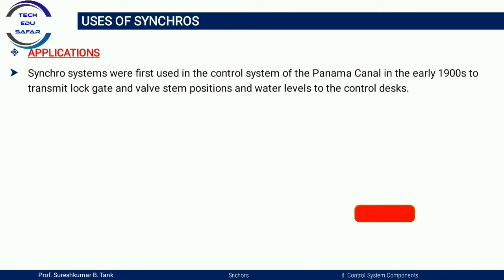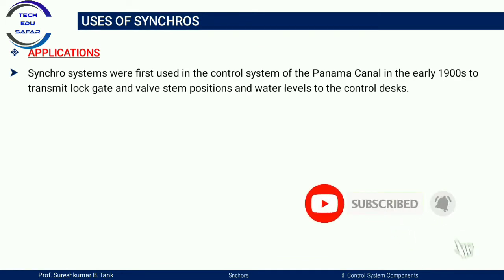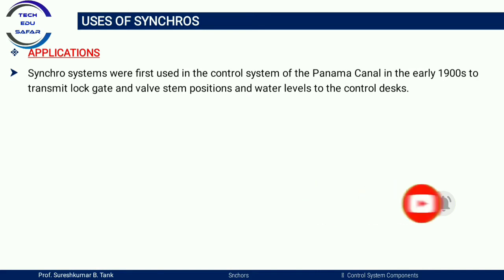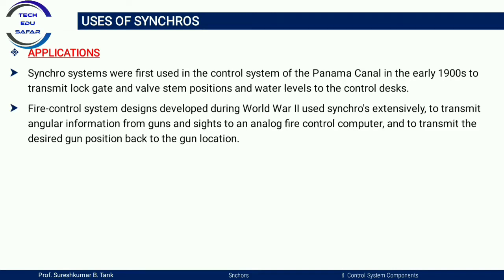The applications of synchro include: first, in the control system of the Panama Canal in the early 1900s to transmit lock gate and wall steam positions and water levels to the control desk. Second, during World War II, fire control systems used synchros extensively to transmit angular information from guns and sights to an analog fire control computer, and to transmit the desired gun position back to the gun location for barrel position control.